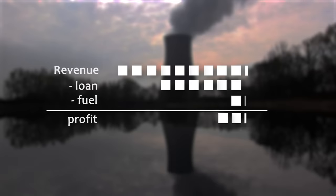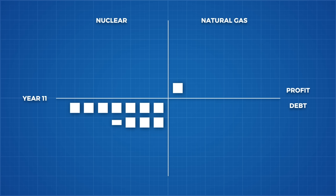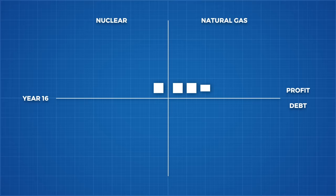Deducting the loan payments and fuel costs leaves us with 2.2 units of profit. Even with the huge loan repayments, which will be paid off completely in 24 years, the nuclear power plant is making far more profit per year. But it has a long way to go in reversing this loss. Year 7. Year 8. The natural gas plant has now broken even. Year 9. Year 10. Year 11. Year 12. Year 13. Year 14. Year 15. Year 16. The nuclear power plant has now broken even and even made a profit.